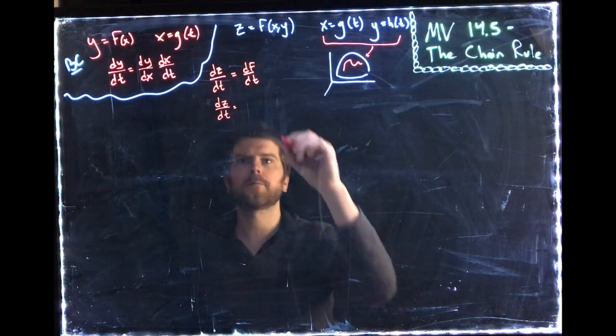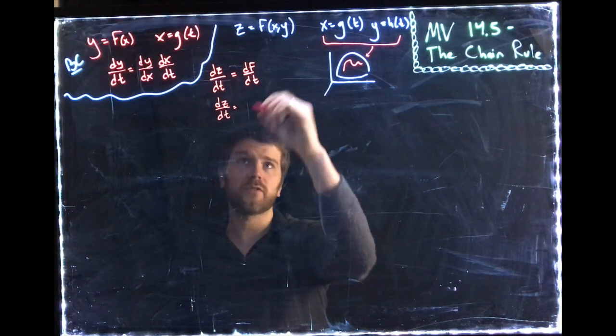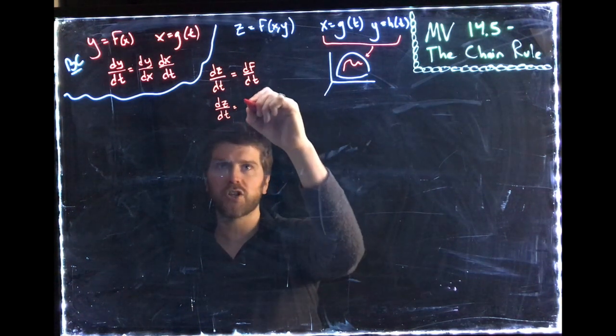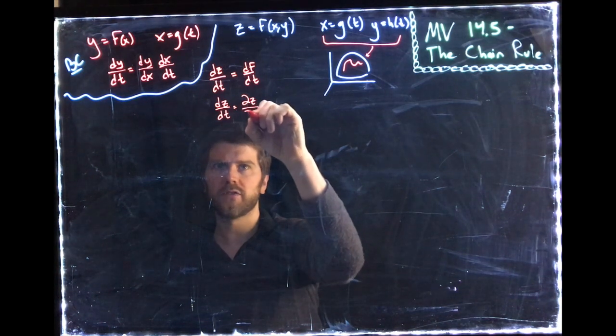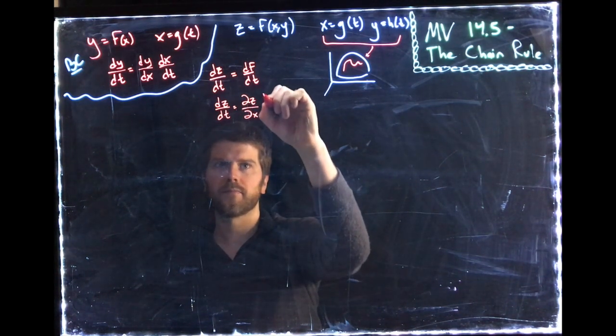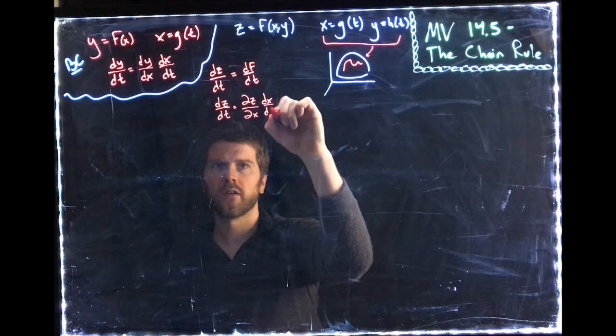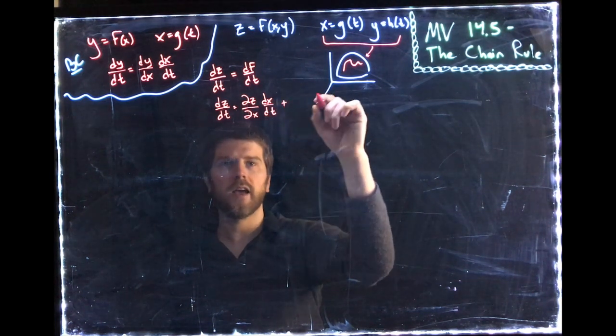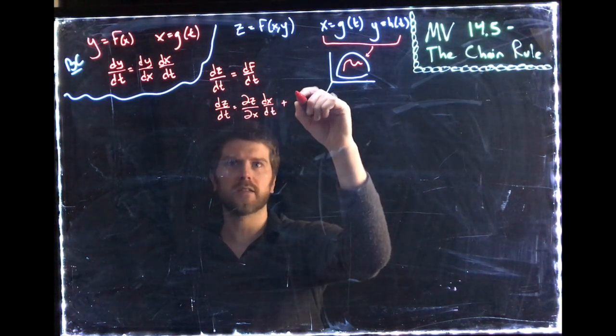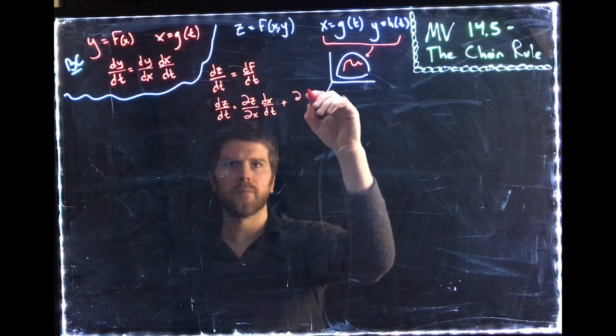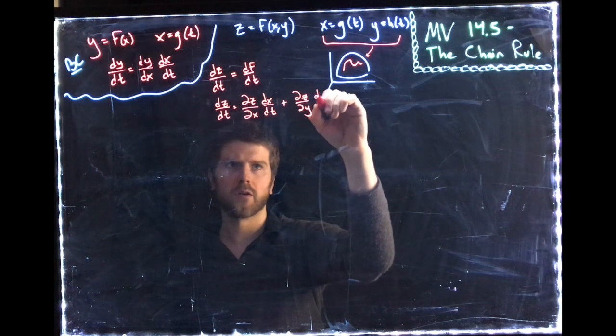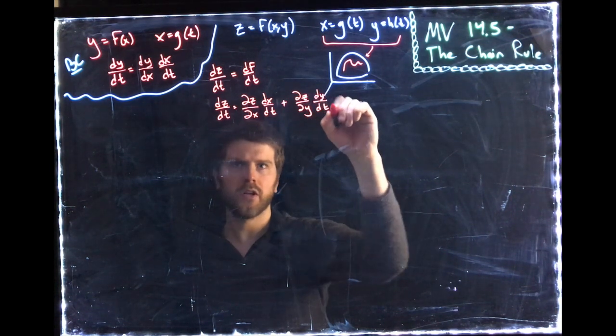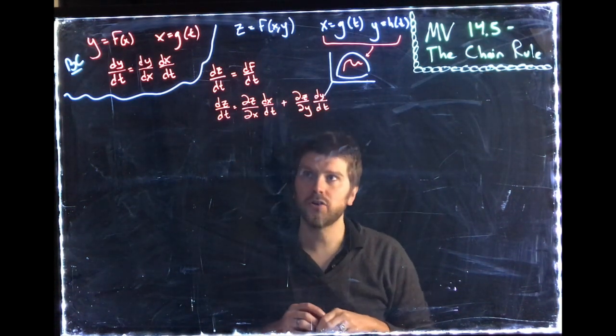And that's going to be equal to, well, why would z change? Z would change because x or y changes. So the partial derivative of z with respect to x times dx/dt. And now we need a second term to explain some changes in y. The partial derivative of z with respect to y times dy/dt. So we just get two terms.